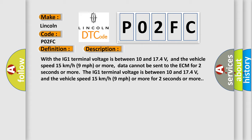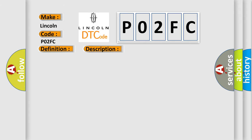The IG-1 terminal voltage is between 10 and 17.4 volts, and the vehicle speed 15 kilometers per hour (9 miles per hour) or more for 2 seconds or more. This diagnostic error occurs most often in CAN communication system cases.